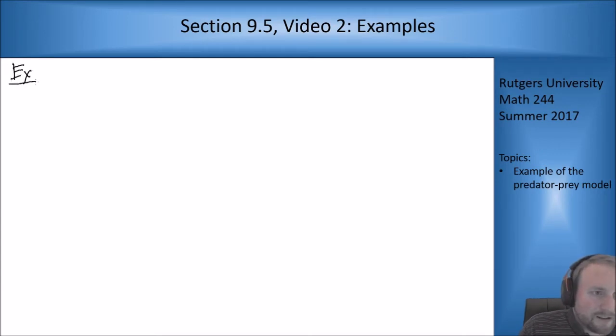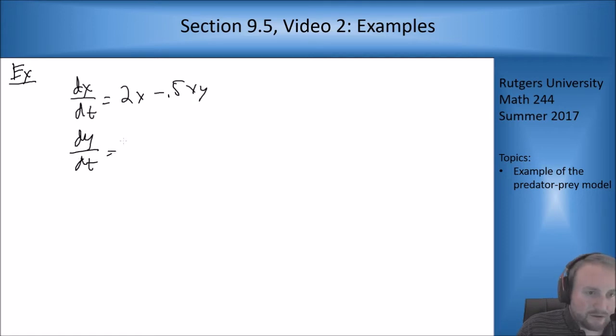The example we're going to look at is dx/dt equals 2x minus 0.5xy, dy/dt equals minus y plus 0.1xy. Where are the critical points for this system?